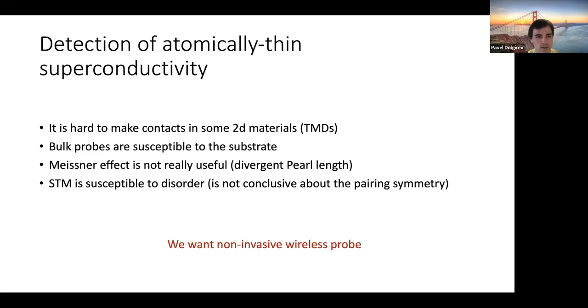If you try to apply something like bulk probes for heat capacity, then you'll likely be measuring substrate properties rather than the superconductor itself. If you think about other probes, and the conventional one is Meissner effect, then you immediately encounter that if you're talking strictly about two-dimensional superconductor, like very, very thin, then Meissner effect is not an option as well.